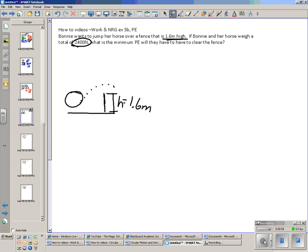The only other thing we know is the 2,400 newtons. That is the gravitational force or the weight. So gravitational force is 2,400 newtons, and we're wondering about the potential energy.